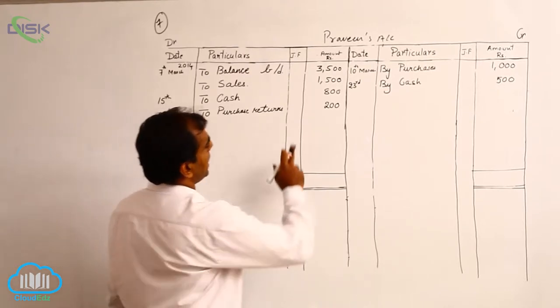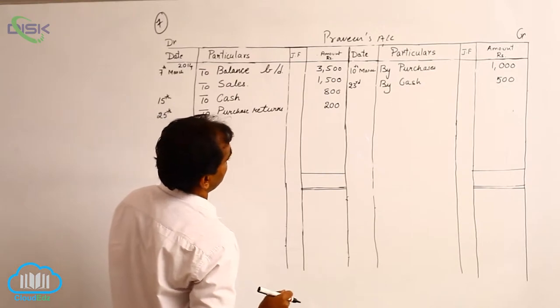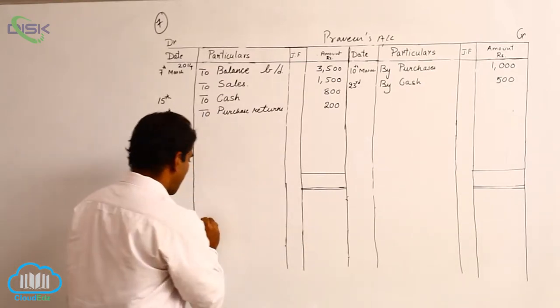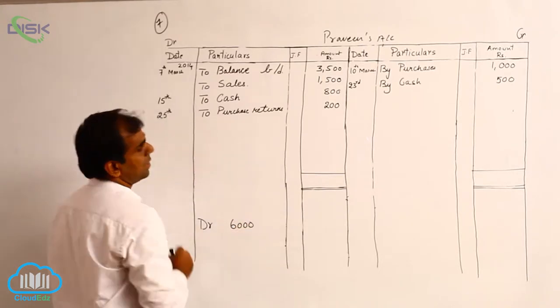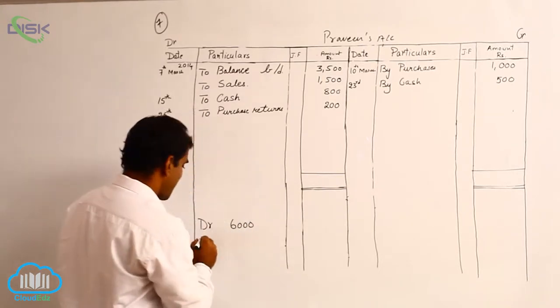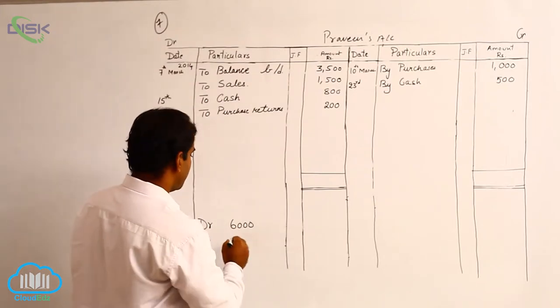Now on the debit side, we have 5,800. So on the debit side, we have the amount totaling to 6,000. On the credit side, we have amount totaling to 1,500.